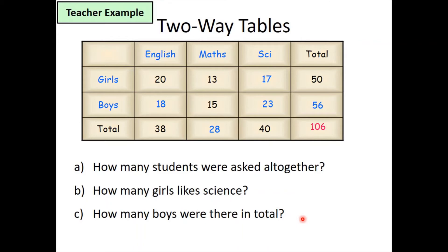Answers to these questions: How many students altogether? That's the total total — 106 pupils altogether. How many girls like science? Looking at girls and science, that box is 17. How many boys were there altogether? That's 18 plus 15 plus 23, reading across — giving a total of 56.